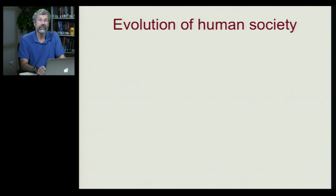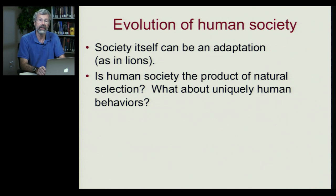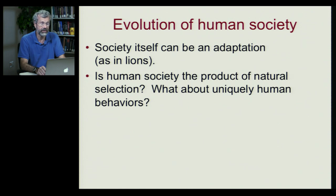Looking at the evolution of human society, we want to ask: could society itself be an adaptation, as we saw earlier in the lions? Is human society really the product of natural selection? And if we're going to do this, we should probably want to be confident that any human behavior shows a genetic basis. So let's look at some uniquely human behaviors and ask how genetic they might be.